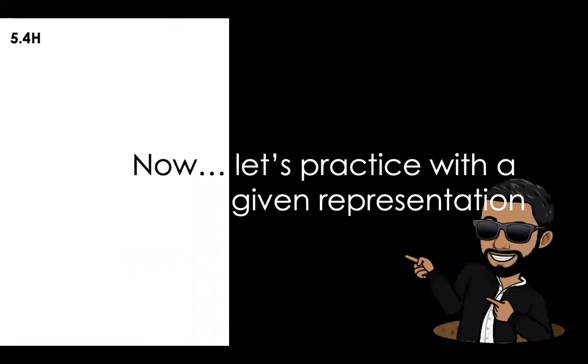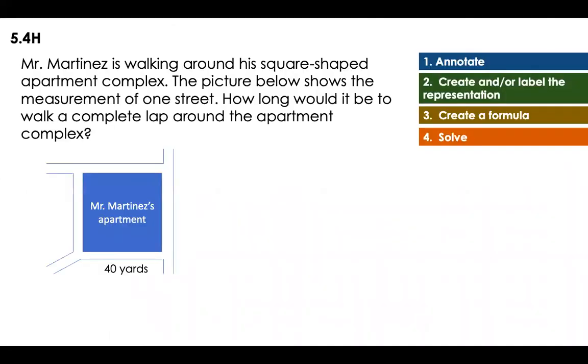Now, let's practice with a given representation. In the previous one, we didn't have a representation. Now, they are giving us a representation. Now, we have to work on that. Mr. Martinez is walking around his square-shaped apartment complex. Square-shaped. The picture below shows the measurement of one street. How long will it be to walk a complete lap around the apartment complex? So, I know that I want to walk a complete lap around it. And if one street is 40 yards, but I know that his apartment complex is like a square, that means that a square has what? Yes. All the sides are the same.